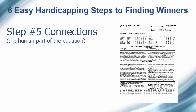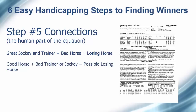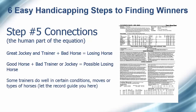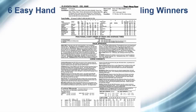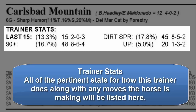The human part of the equation is substantial. True, a great rider and accomplished trainer can't win on a bad horse, but by this stage you should have eliminated the bad ones. However, good horses can be beaten by a jockey's poor decision or by a trainer who has a hard time cinching up a saddle correctly. Some trainers tend to do well in certain conditions, certain moves, or with certain types of horses. Let the record guide you in this area. Eliminate horses trained or ridden by traditionally low percentage stables or jockeys. The race sheets show you how a trainer does with any moves he is making with the horse in today's race. In the horse data box is a list of all the pertinent trainer stats you'll need to understand how a trainer has been doing in the last 15 starts, as well as how they do with any moves they'll be making with this horse today.